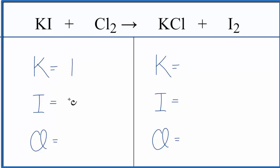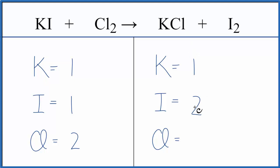We have one potassium, one iodine, and two chlorines. We have one potassium, two iodines, and then one chlorine.